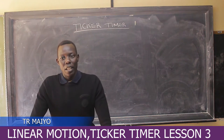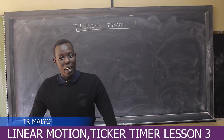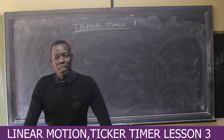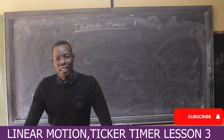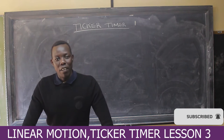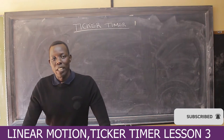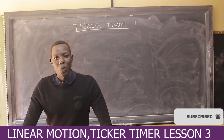Welcome to physics lesson on linear motion — the ticker timer. It's one of the methods we use to measure and find acceleration. As long as you have the final velocity and the initial velocity, you can get the acceleration.